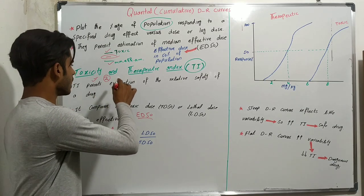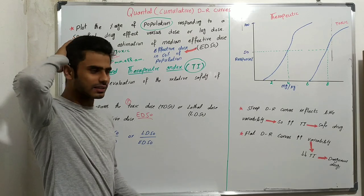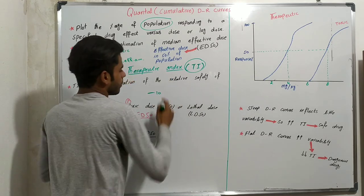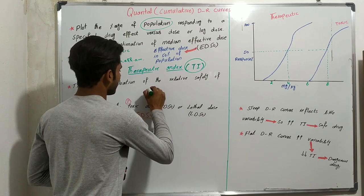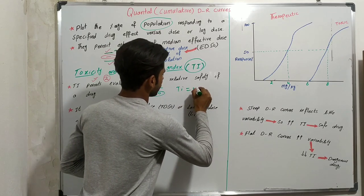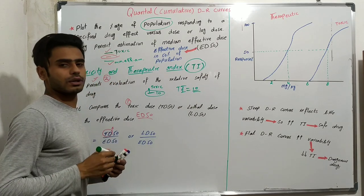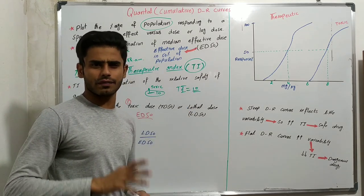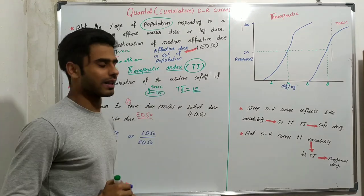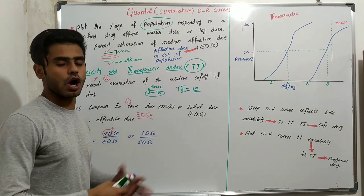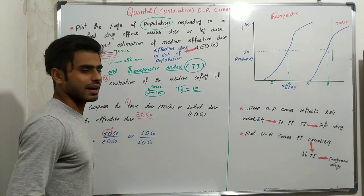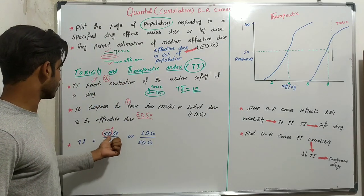The therapeutic index permits evaluation of the relative safety of a drug. For example, if the therapeutic index is 10, and the dose is increased beyond 10, then it will become toxic. So the therapeutic index tells us about safety — how much dose of a drug is safe for our body. By using this graph we can determine the therapeutic index using the formula: therapeutic index equals TD50 divided by ED50.